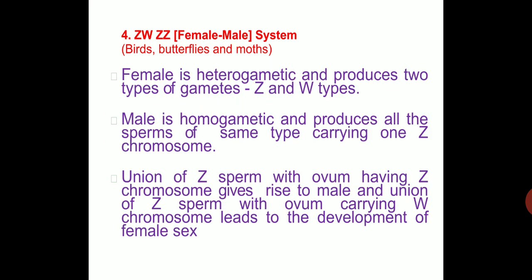The fourth system is the ZW/ZZ female-male system, found in birds, butterflies, and moths. In this system, the female is heterogametic, producing two types of gametes — Z and W type. The male is homogametic and produces all sperm carrying one Z chromosome. Union of Z sperm with an ovum having Z chromosome gives rise to male (ZZ), and union of Z sperm with an ovum having W chromosome leads to female (ZW).